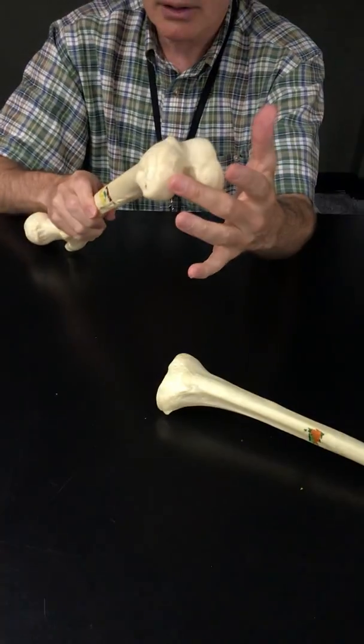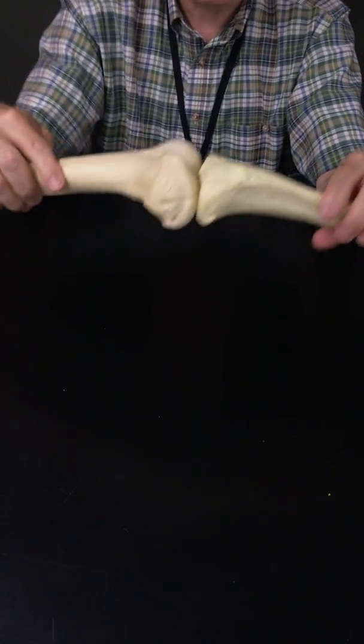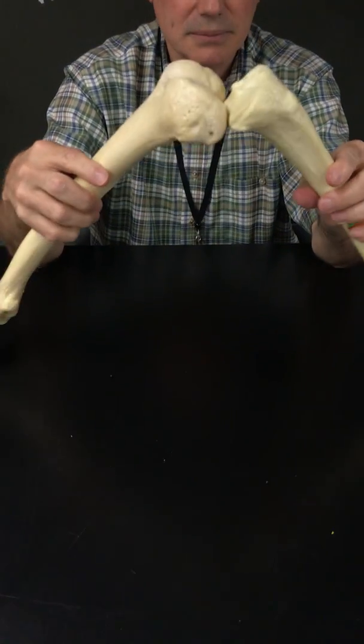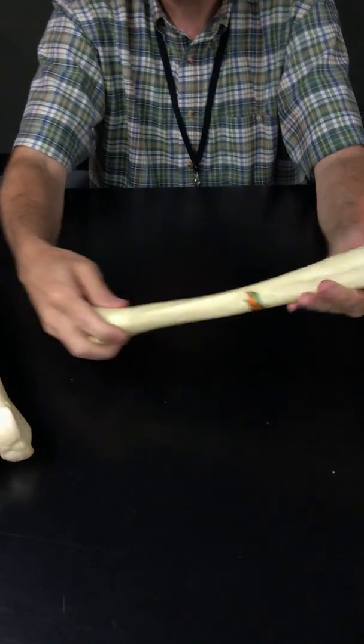It's the two condyles of the femur meeting up with the two condyles of the tibia. That's how they fit together and create a hinge joint. Now we have to get some perspective here. One condyle is called medial, one's called lateral.